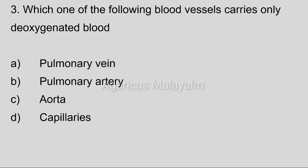Third question: Which one of the following blood vessels carries only deoxygenated blood? Option A: pulmonary vein. Option B: pulmonary artery. Option C: aorta. Option D: capillaries. Correct answer: Option B, pulmonary artery.